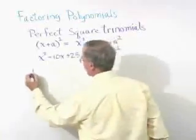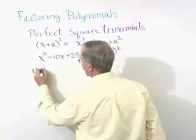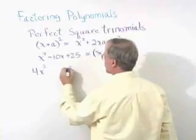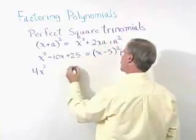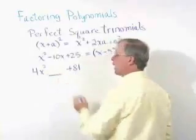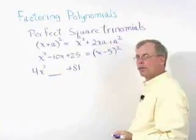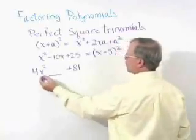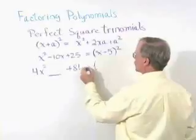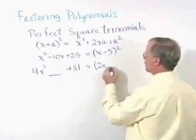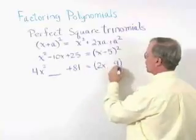Let's try another one. If we had 4x squared plus 81, and inside, what would we have to have for that to be a perfect square trinomial? Let's see. If this was a 4x squared, that means we would have 2x. And if this is 81, that means this would be a 9.